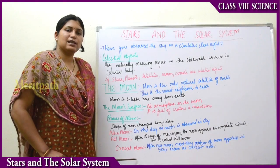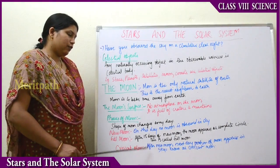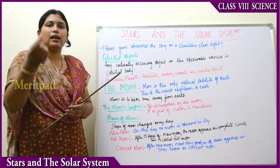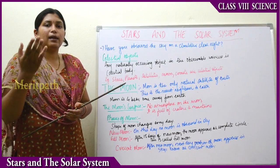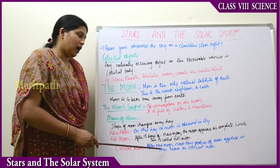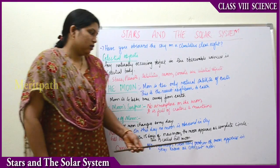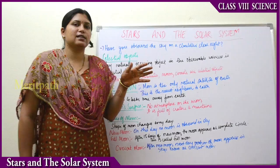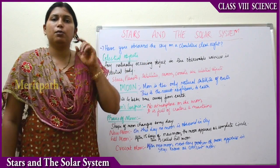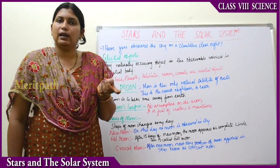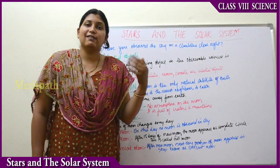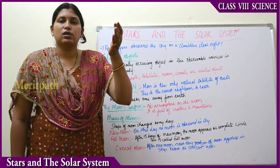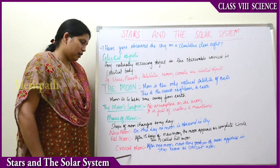There is also the crescent moon. Immediately after the new moon day, from the next day onwards, the moon starts appearing in a thin line shape known as the crescent moon, also called the crescent. Day by day the size increases. That crescent-shaped moon is known as the crescent moon.